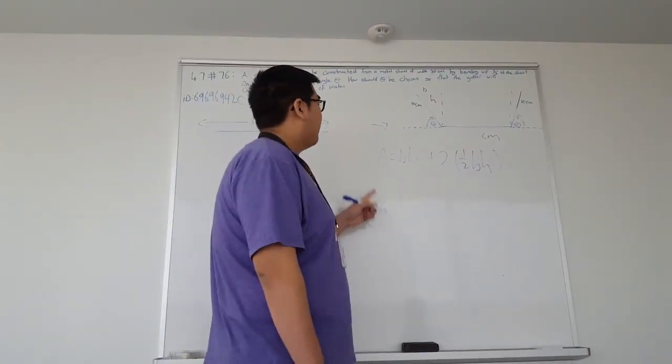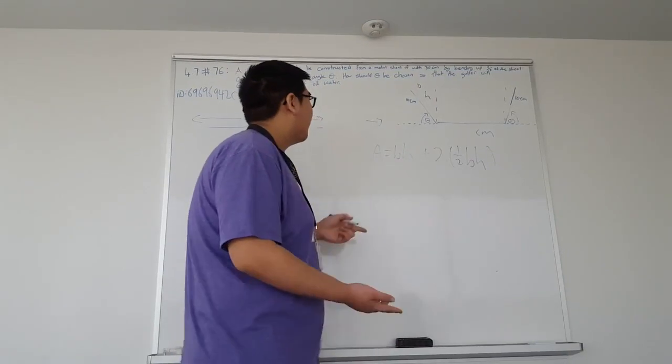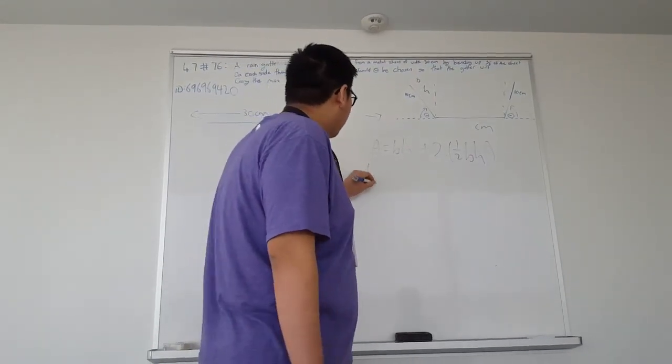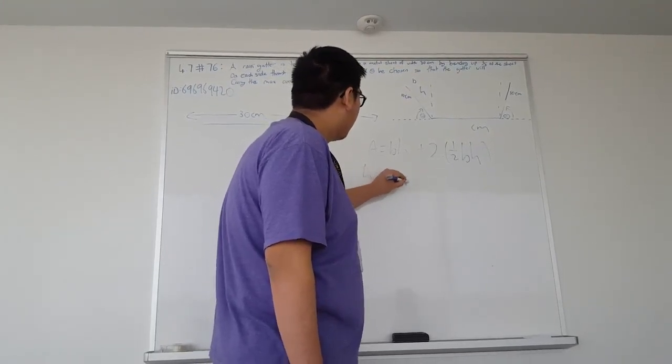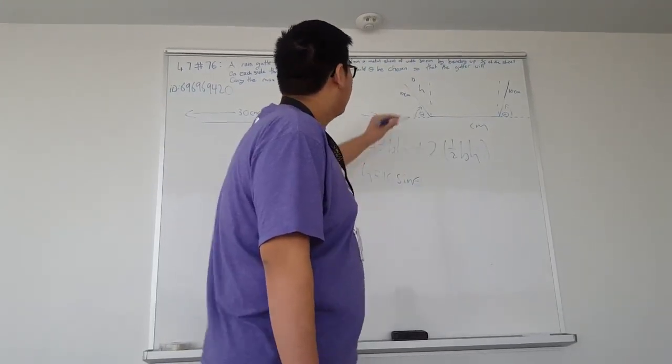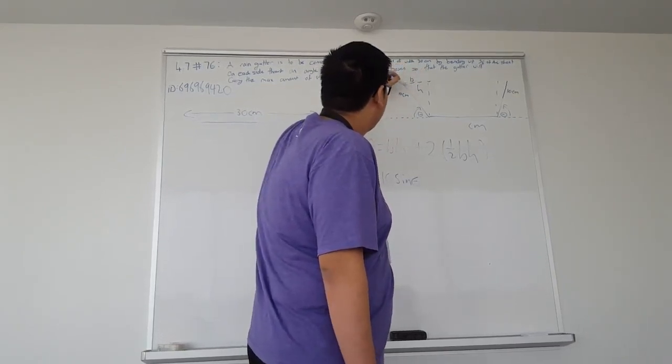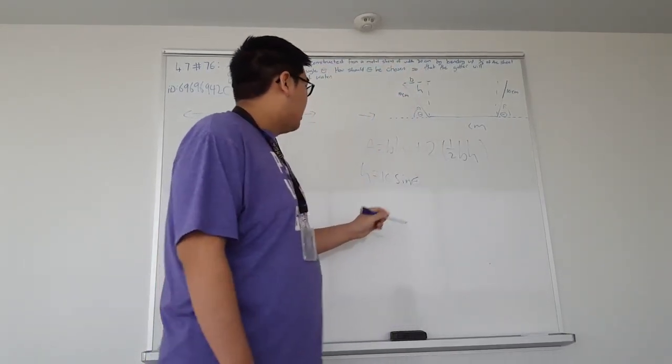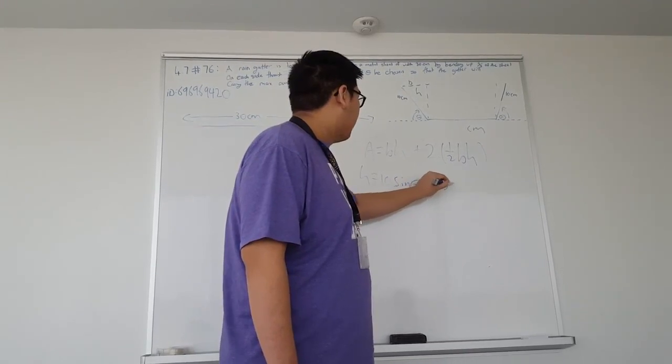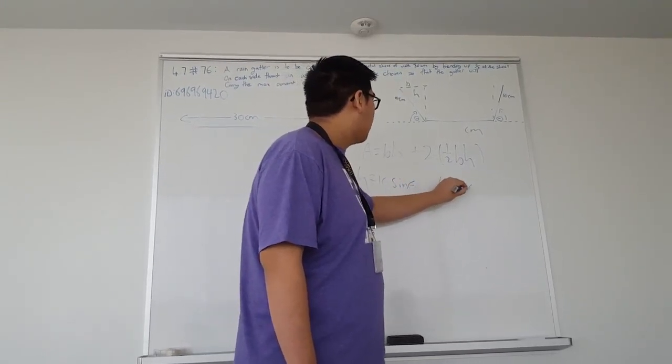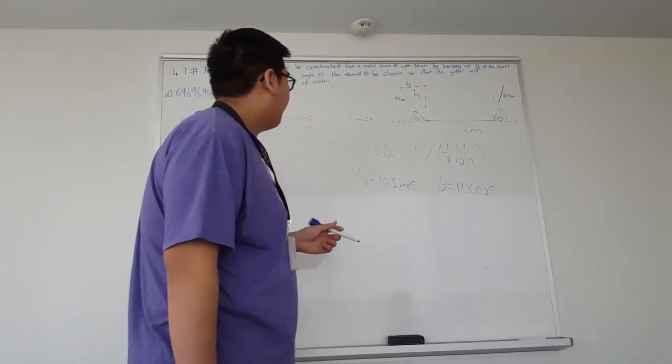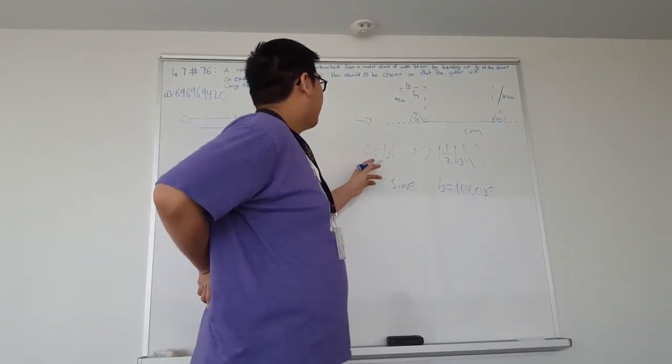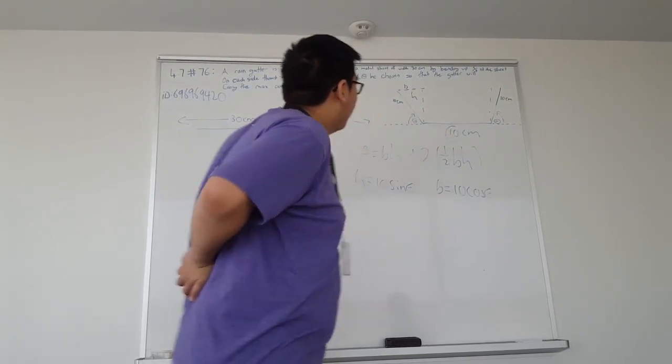So we have to rearrange everything in terms of theta. So our height of each triangle would be 10 sine theta because of the Z formation that this can make here. And that means that our base of each triangle would be 10 cos theta. However, the base of the square doesn't change because it's a constant 10 centimeters here.